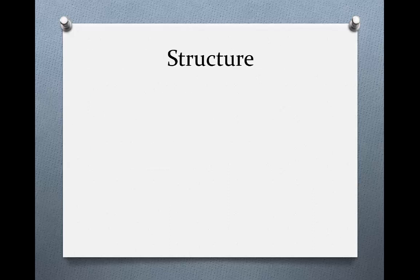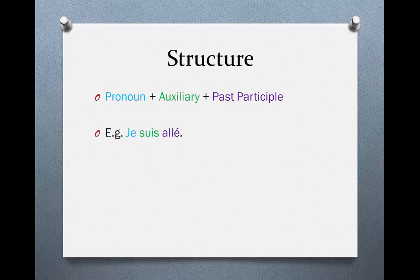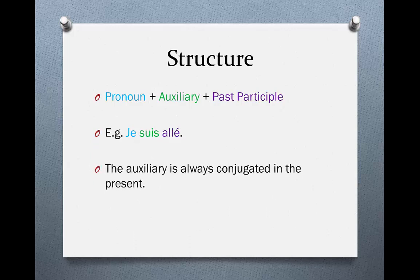Now we're going to have a look at how to structure the tense. All we need is a pronoun, plus the auxiliary, plus the past participle. For example, je suis allé. As you can see, the auxiliary is always conjugated in the present, and it's located between je, the pronoun, and allé, the past participle of aller.